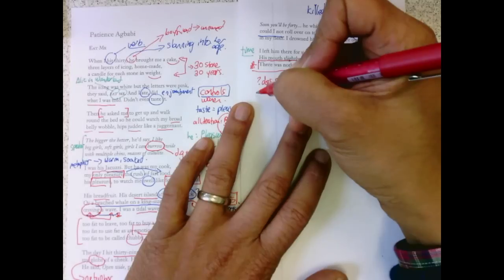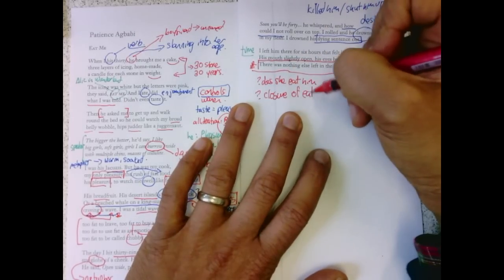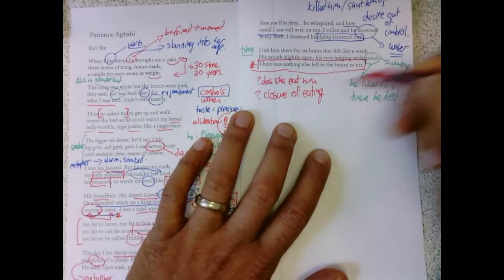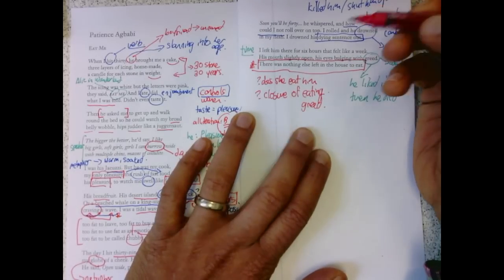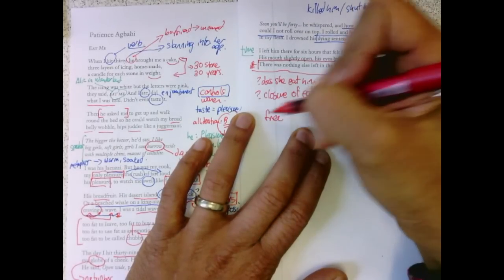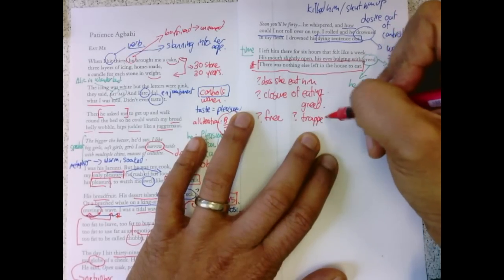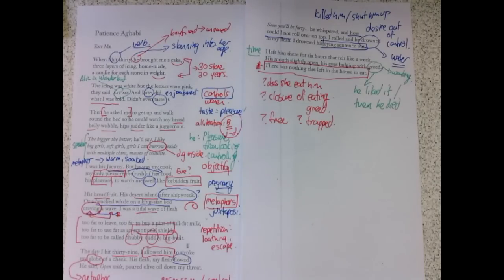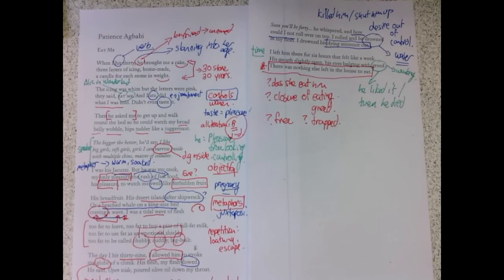Is it a closure of eating? So there's no more to eat. Is it a closure of greed? Does she feel free? Is she trapped? I think that poetry is not about closing off these meanings. I think the ending has all those possibilities present in it. That's my reading, basically, of this poem.